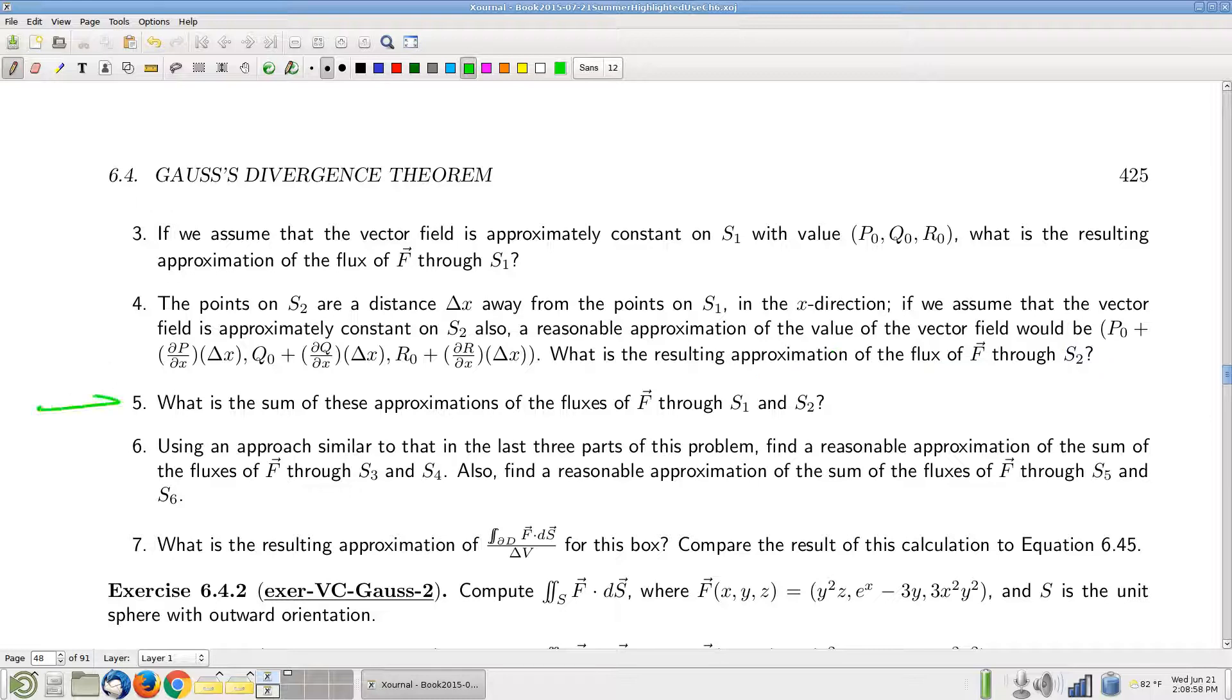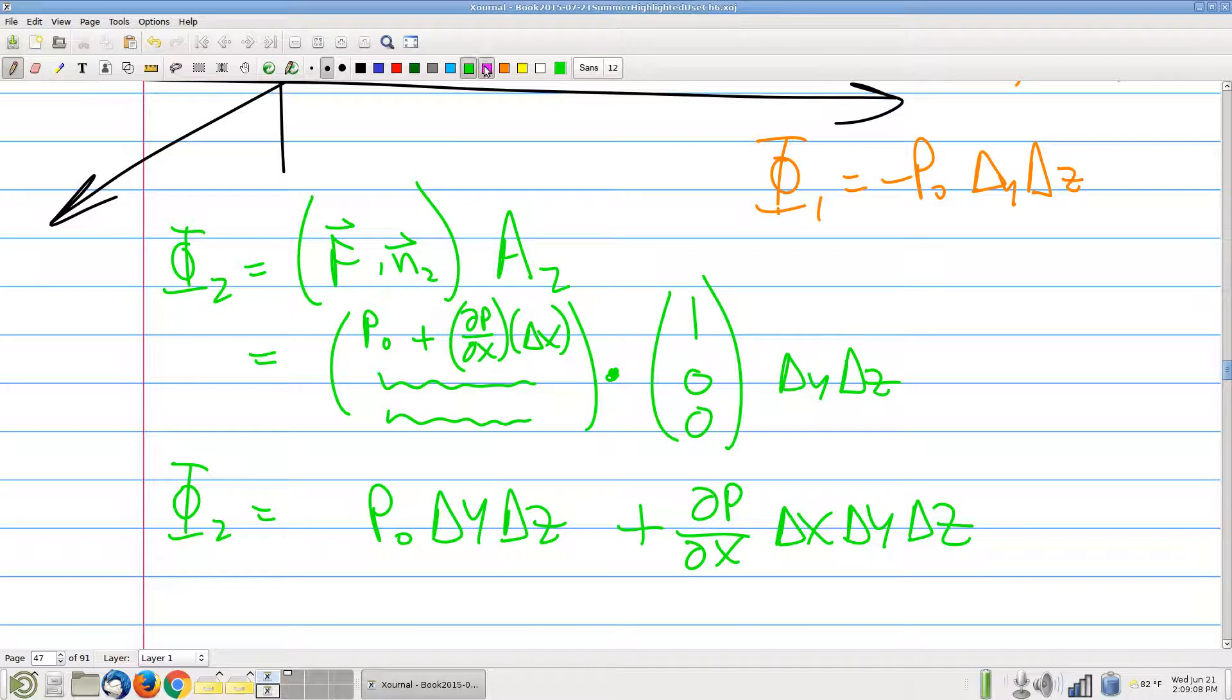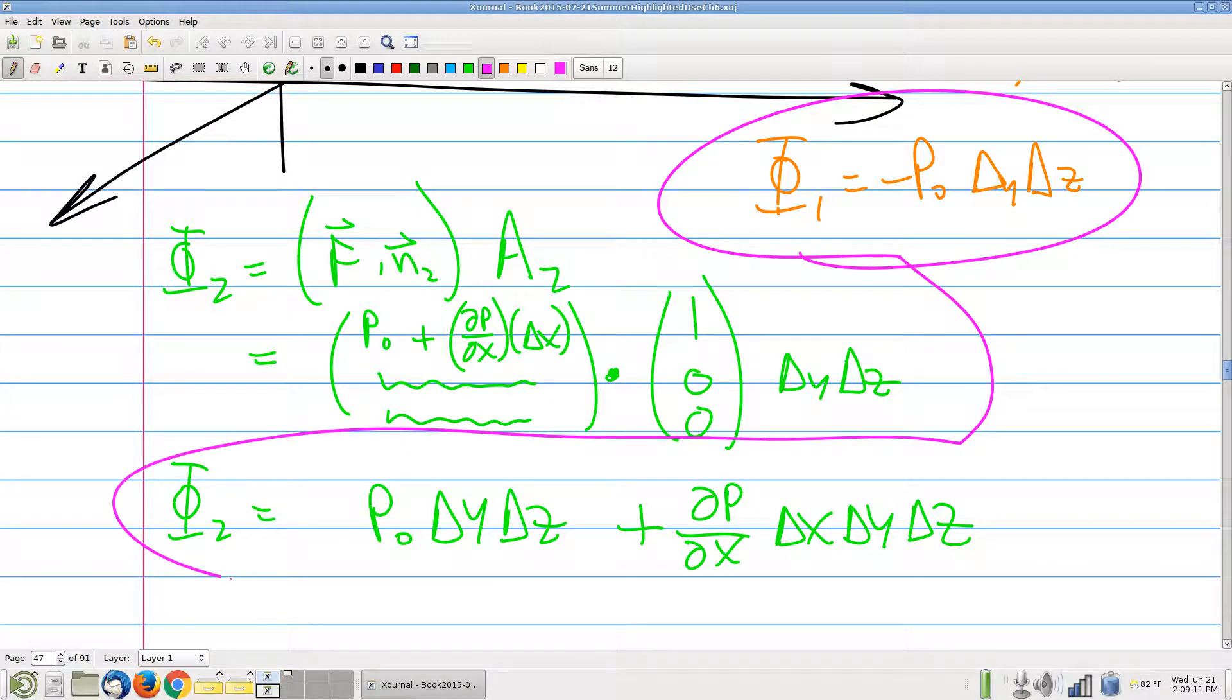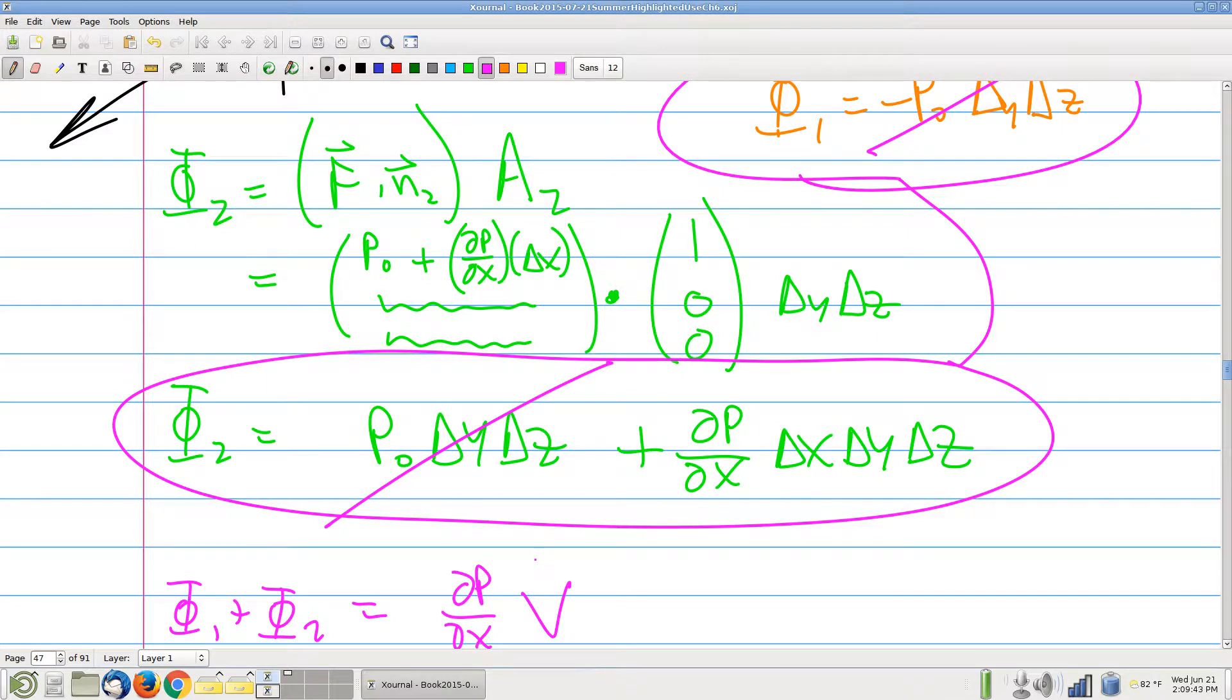Next part of the question. What's the sum of the fluxes through S1 and S2? So we just have to add these things that we just computed. I need to compute specifically then that plus that. And notice that that cancels that. And so therefore phi 1 plus phi 2 is just this one left over term. Partial of P with respect to x times V. I'm going to just call that because that's what V is, right? Delta x, delta y, delta z. Very good?